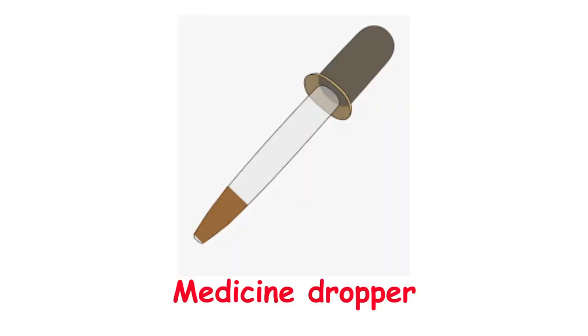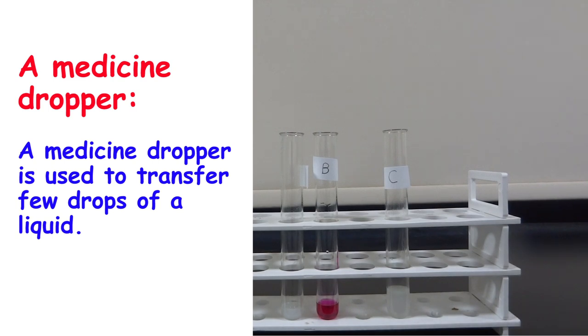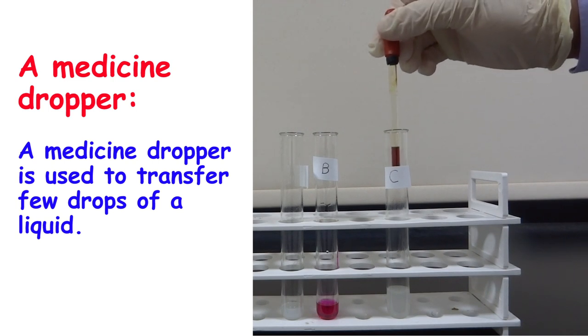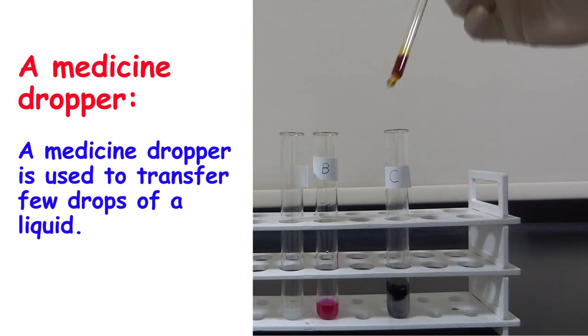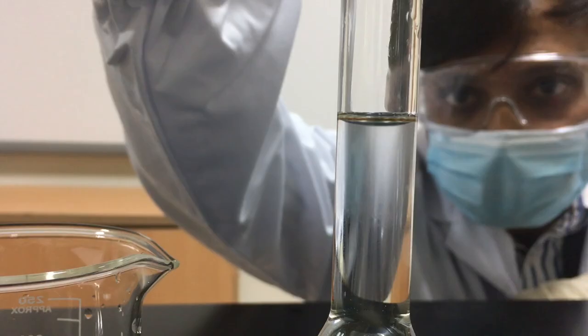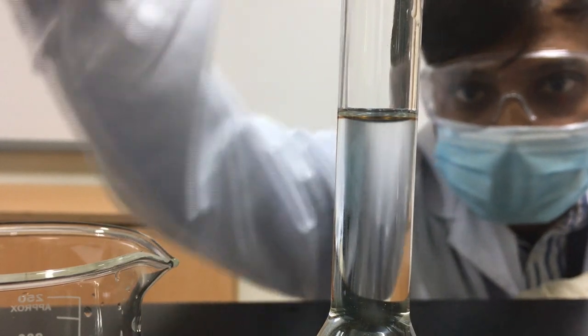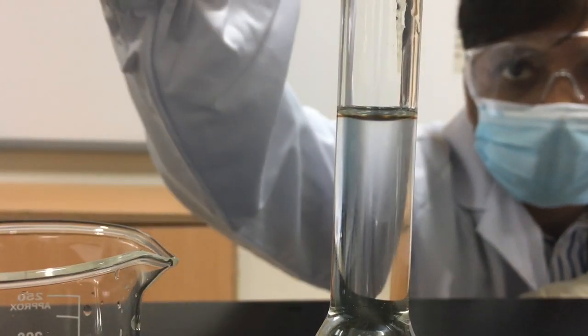From its name, it's clear that the medicine dropper is used to transfer a few drops of liquid. In this example, the scientist is adding a few drops of iodine to detect the presence of starch. And here, a few drops are added to fix the volume of the liquid.